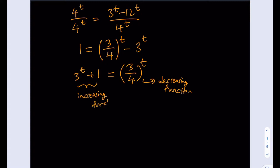So what does that mean? You have an increasing function and a decreasing function. That means they're just going to intersect at a single point. We can find that point by inspection. If you just try some small integers, you're going to notice that t equals negative 1 is the only solution. If you replace t with negative 1, you get 3 to the power of negative 1 plus 1 on the left-hand side and 3 fourths to the power of negative 1 on the right-hand side. This is equivalent to 1 plus 1 third, which is 4 thirds. And the reciprocal of 3 fourths is also 4 thirds. So this checks.